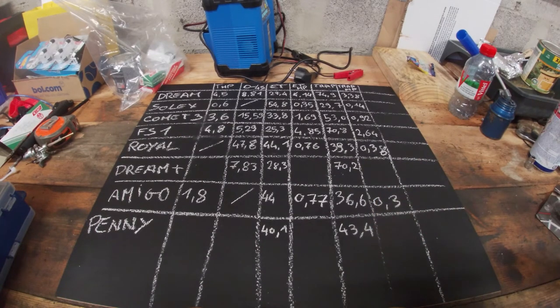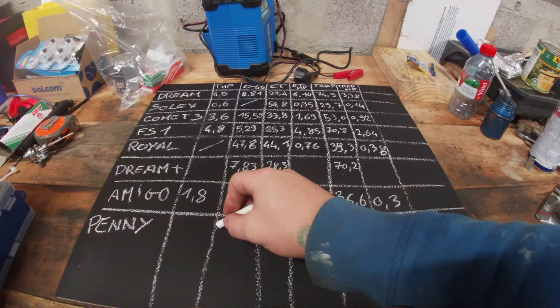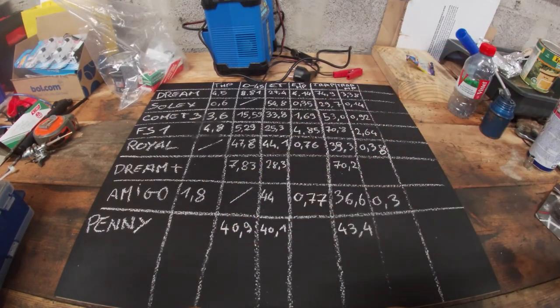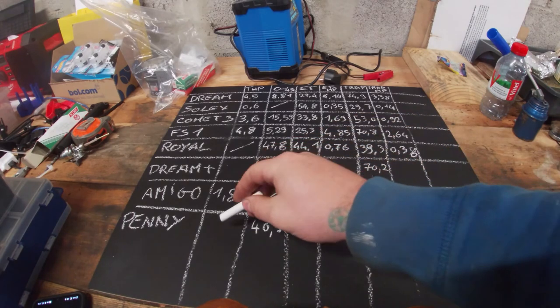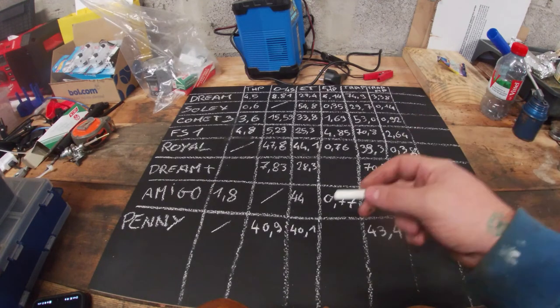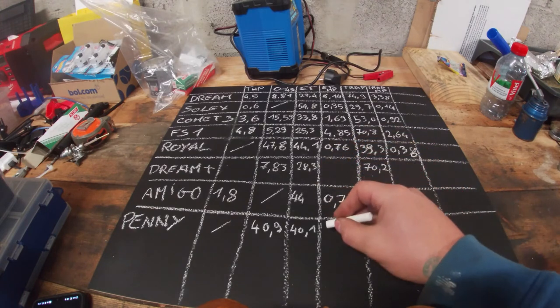We also did 0 to 45 in 40.9 seconds. I actually could not find a theoretical horsepower for this engine. There's not much data on Flandria sadly enough. With the elapsed time method, we have 1.01 horsepower.